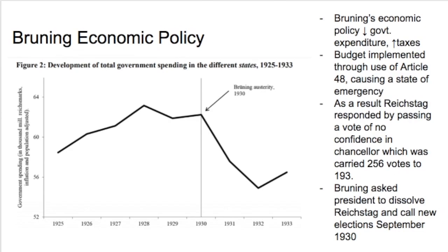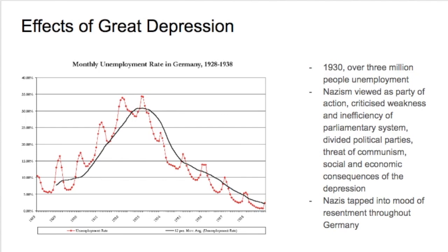Government expenditure plummeted under this austerity with very tight controls over government spending. The Great Depression hits hard — monthly unemployment shoots up. By 1930, over three million people were unemployed. The Nazis, viewed as a party of action, criticised the weakness and inefficiency of the parliamentary system, the divided political parties, the threat of communism, and the social and economic consequences of the depression. They targeted all the key problems which the Great Depression highlighted to the rest of Germany.